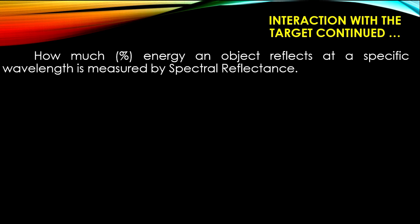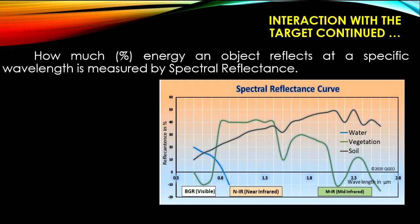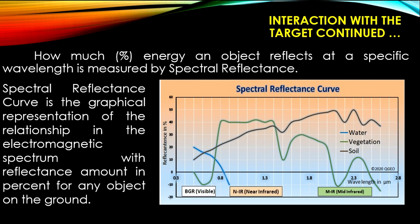How much percentage of energy an object reflects at a specific wavelength is measured by the spectral reflectance curve. The spectral reflectance curve is the graphical representation of the relationship in the electromagnetic spectrum with reflectance amount in percent for any object on the ground. Here is the spectral reflectance curve.